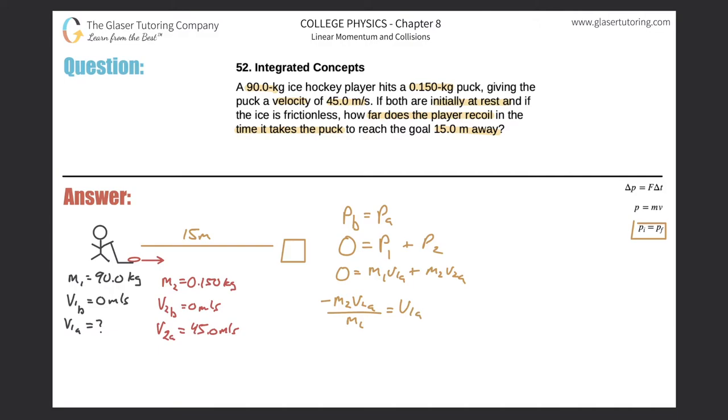So that should look something like negative m2v2a all over m1 should equal v1a. So this represents the recoil velocity of Gretzky and we expect it to go backwards to the left, and that's basically what the negative sign implies here. So now let's keep setting up some equations.